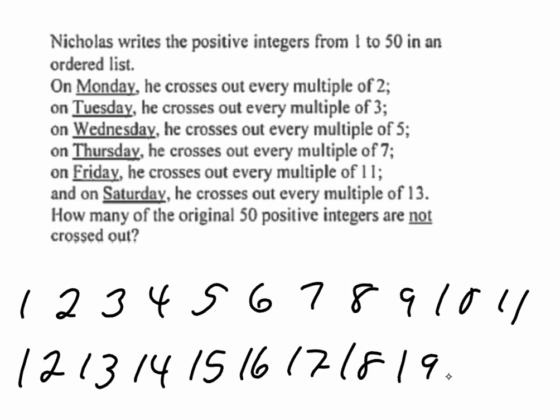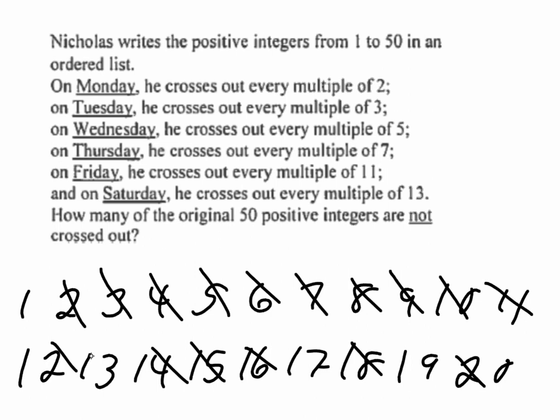Remember, math is all about patterns. So as soon as I cross out multiples of 2, we know right away that all the even numbers are gone. And then multiples of 3. So anything that I haven't already crossed out that's a multiple of 3 is gone. Multiples of 5, some of them have already crossed out. 7s, 11s, 13s.